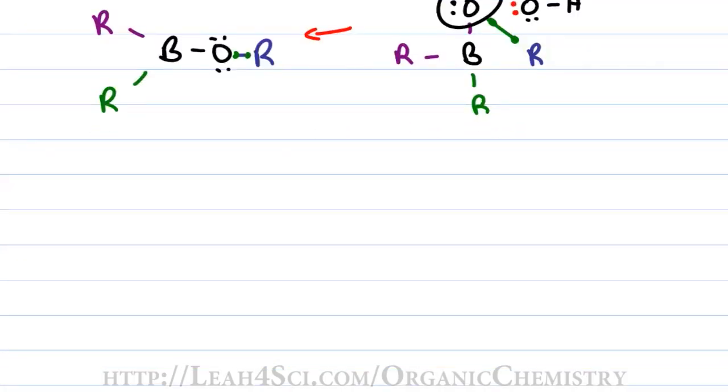Now remember, if boron started out as a trialkyl borane, this reaction is going to happen another two times where we have two HOO- attacking boron one at a time, so we have that internal shift. That will give me a boron that is no longer bound to three R groups but instead bound to three OR groups.